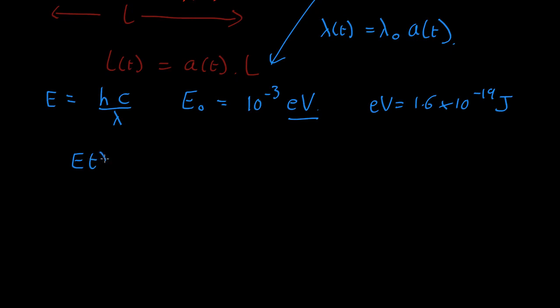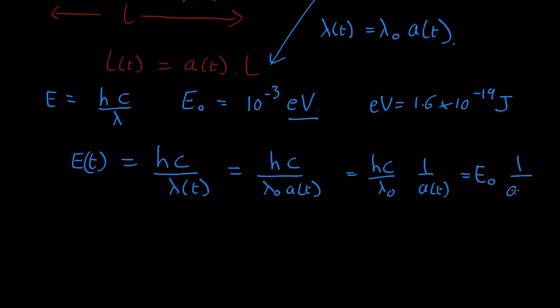How about in the past? The energy at some time t is going to be hc over wavelength at that particular time. We know that's equal to hc and the lambda wavelength at that particular time is just the wavelength today times a of t, which is equal to hc over lambda nought, 1 over a of t, and the hc over lambda nought is just the energy today times 1 over the scale factor.